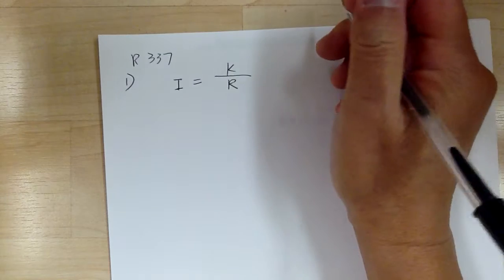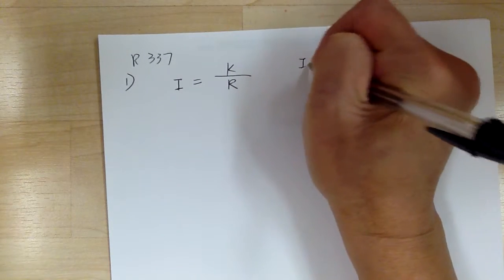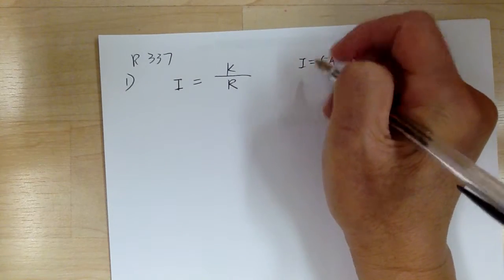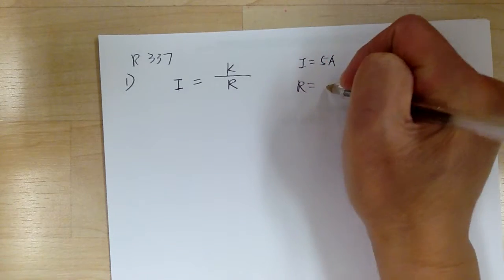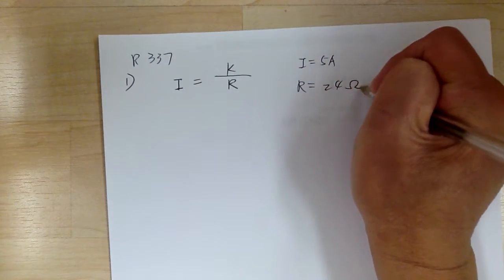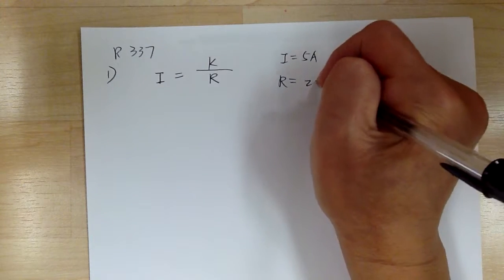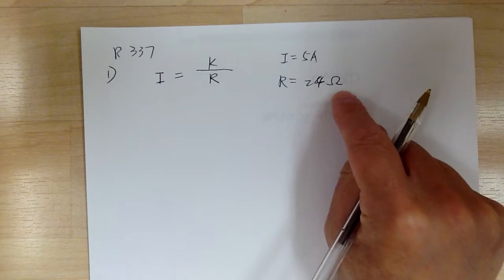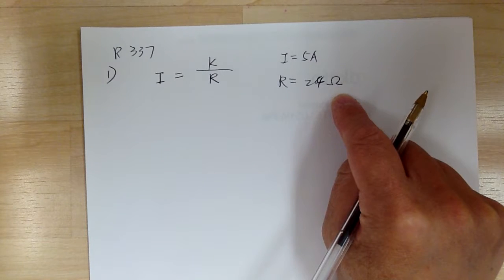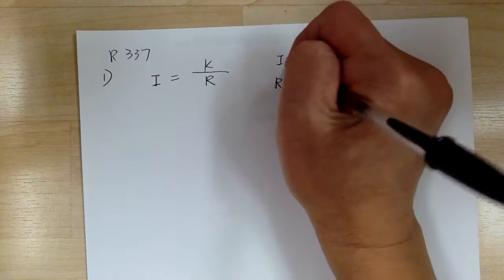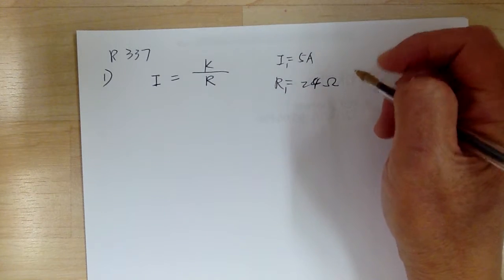If the current is 5 amps, so I equal to 5 amps, when a resistance equal to 24 ohms. So this is simple, it's Greek letter omega. So it stands for ohms. And that's the unit of measure for the resistance.